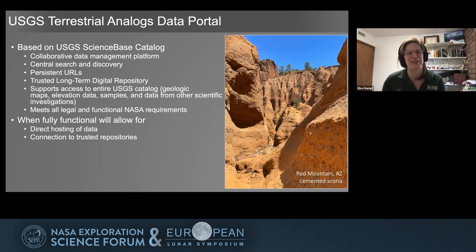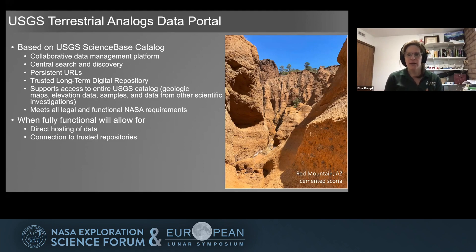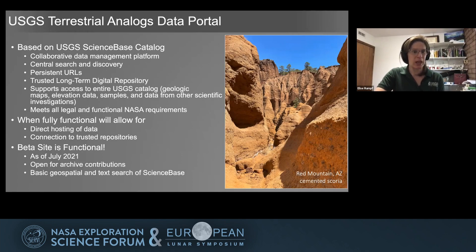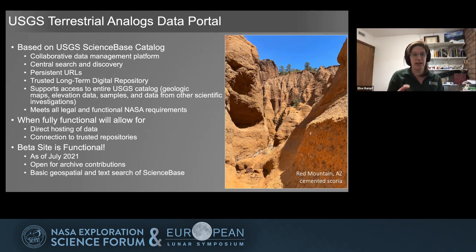When the data portal is fully functional, it will allow for both direct hosting of data — so folks can upload their data directly to our repository — but also connection to other trusted repositories. There's an astrobiology repository and other repositories out there, and we want to be able to link to them so that we don't have to recreate and resubmit everything. We have a beta site that is functional as of this month. It is open for archiving contributions, and this first version allows for basic geospatial and text search of ScienceBase.